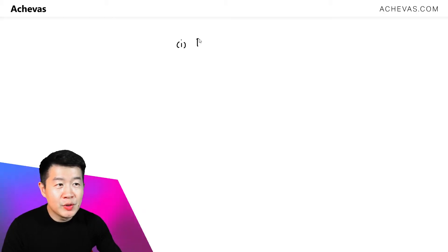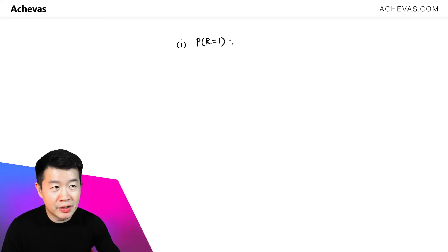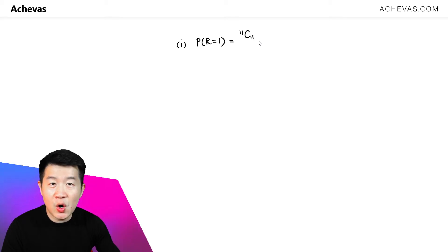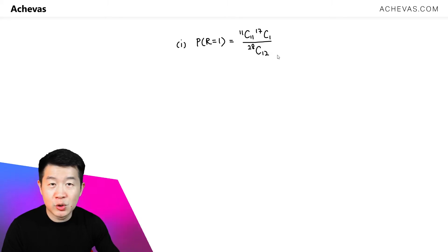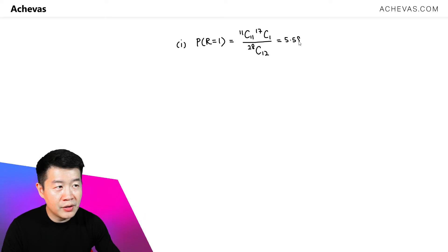In part 1, the first thing we are going to do is calculate the probability of getting 1 rectangle. Out of 11 circles, we will choose all 11 circles, but out of 17 rectangles we will choose 1, so that we have a total of 12 shapes. This is divided by 28 — that is 11 plus 17, a total of 28 shapes — choose any 12 shapes. The probability for this is 5.5881 × 10⁻⁷.